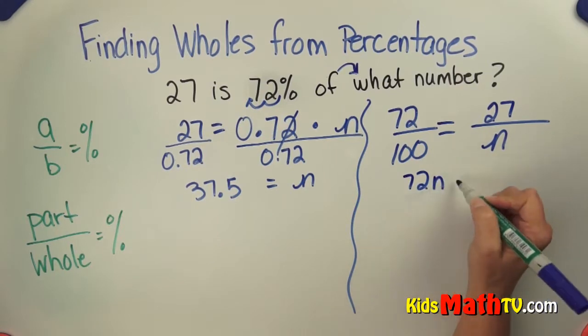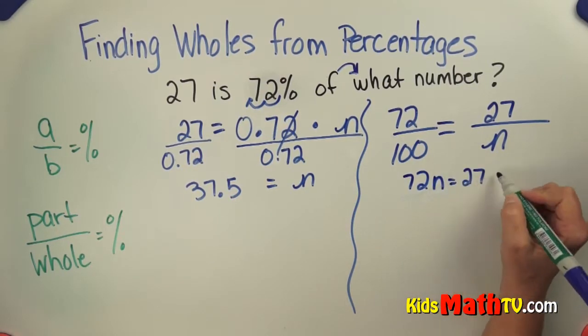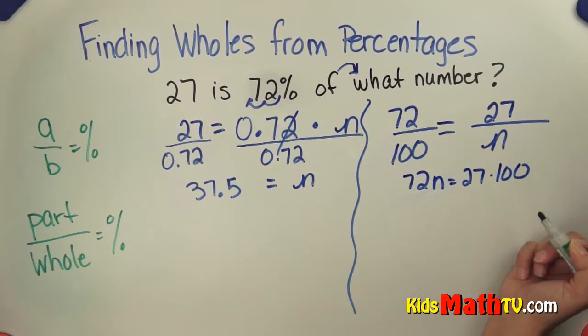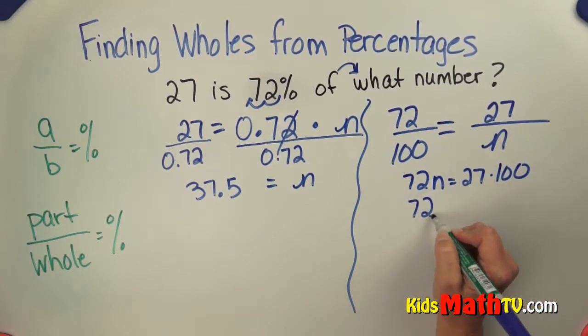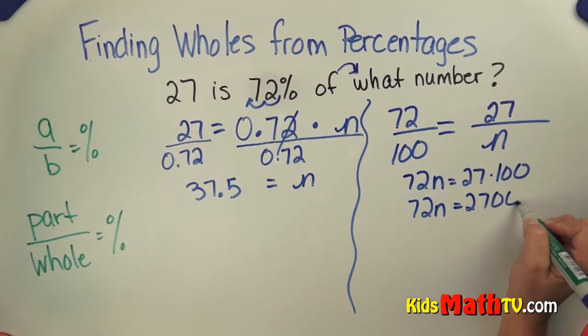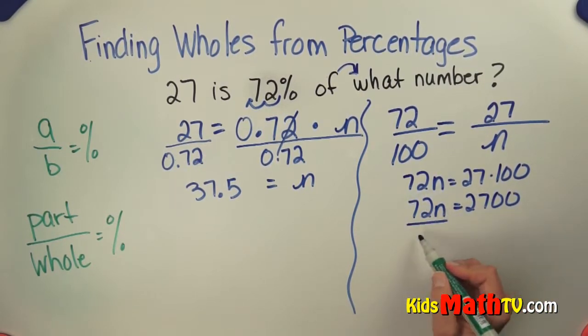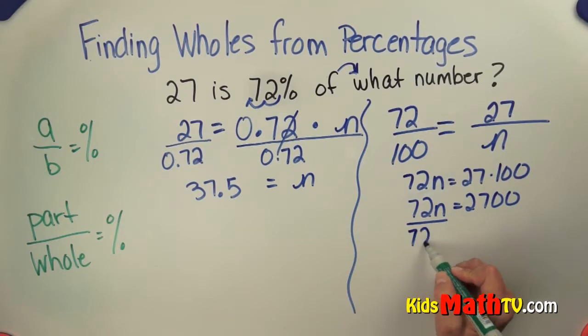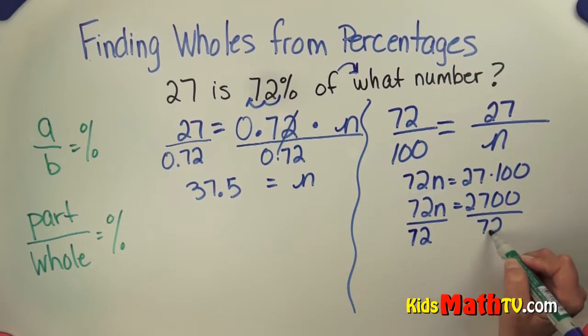72 times N equals 27 times 100. Then we have 72N, and I'll simplify this side, is 2700. And isolate this variable by dividing by 72 on both sides of the equation.